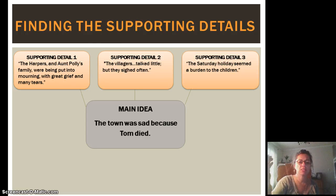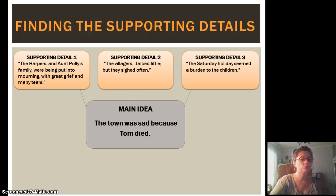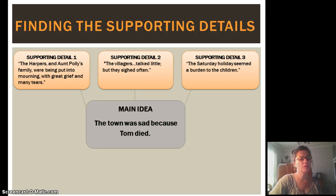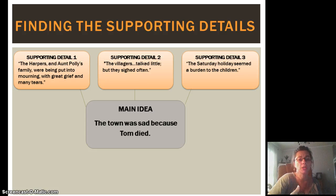We know the main idea is the town was sad because Tom died. Supporting detail one pulled directly from the text: the Harpers and Aunt Polly's family were being put into mourning with great grief and many tears. Supporting detail two: the villagers talked little, but they sighed often — another indication of sadness. And finally, supporting detail three: the Saturday holiday seemed a burden to the children — another sign of sadness when children are feeling the burden.